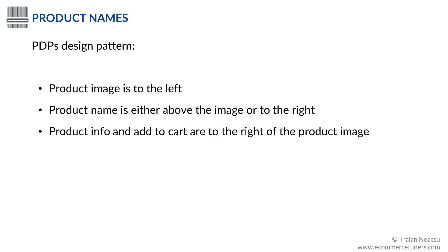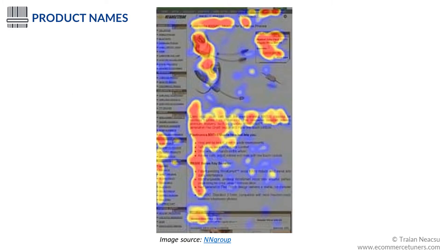Product names are one of the elements that attract the user's eyes within moments of landing on a page. On most e-commerce websites, the design of the PDPs usually follows the same pattern: the product image is to the left, the product name is either above the image or to its right side, the Add to Cart button is to the right of the product image, and the product info is either on the right or below the product image. This is probably why users scan PDPs using the well-known F pattern.